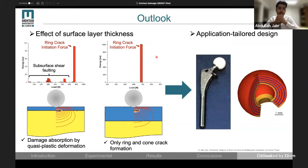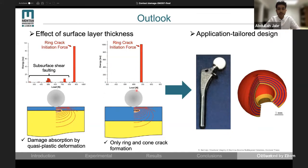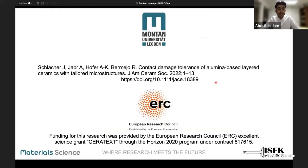For future work, we will look at the effect of the surface layer thickness. From preliminary results, we saw that it is possible to control the damage mode by designing the outer layer thickness with respect to the shear stress field. For example, if we increase the surface layer thickness, we can avoid the formation of subsurface shear folding. I believe that these results will have important implications for novel applications, such as the production of hip joint implants which can be very damage tolerant. If you are interested in this work, you can read more about it in our recently published paper in the Journal of the American Ceramic Society.